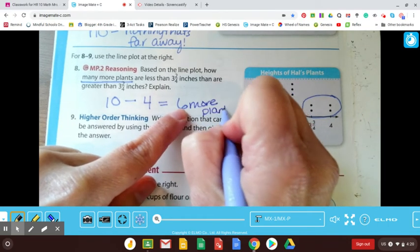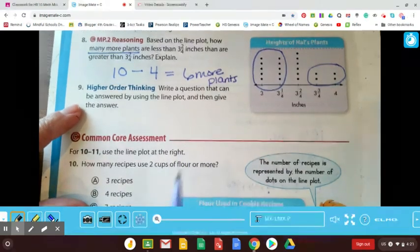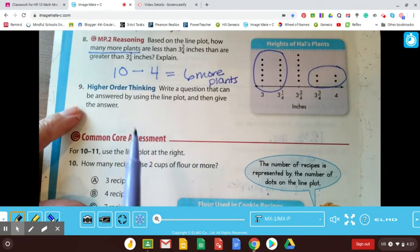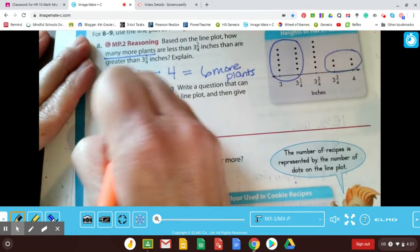So not too hard after all. Now they want us to write a question that can be answered by using the line plot. And then they want us to give the answer. All right. I don't know. Maybe we could ask, and there's lots of questions that we could ask, but maybe we'll do how many plants were measured in all? Right? It does seem like a lot.